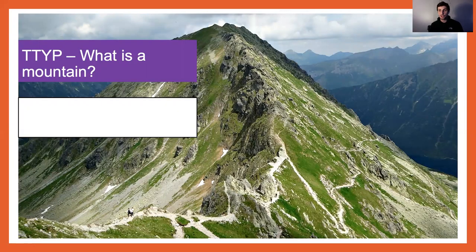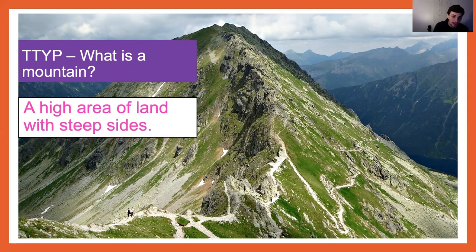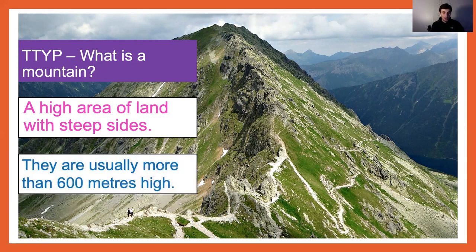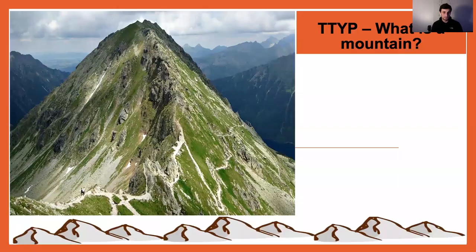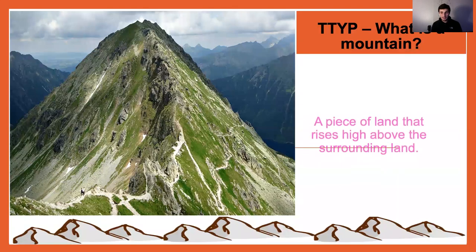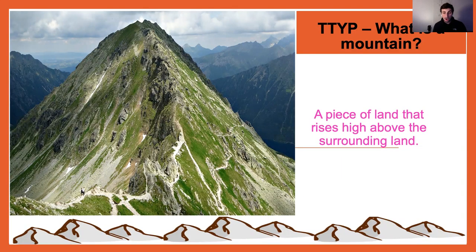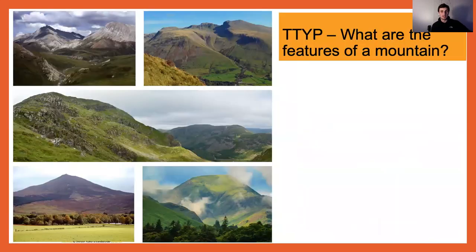So what is a mountain? Short little pause point for you here — pause the video. Can you remember a definition for a mountain? Well done. If you said it was a high area of land with steep sides — you can see it in the picture there — typically they are usually more than 600 metres high. That is the definition for a mountain. A piece of land that rises high above surrounding land, and they're usually more than 600 metres high.